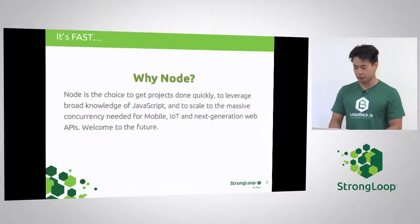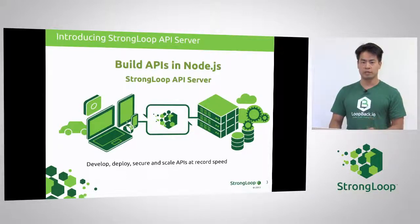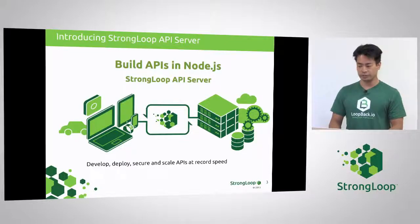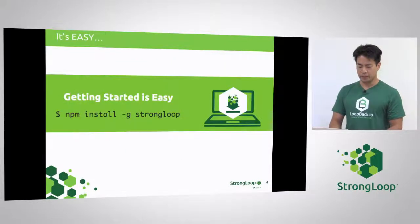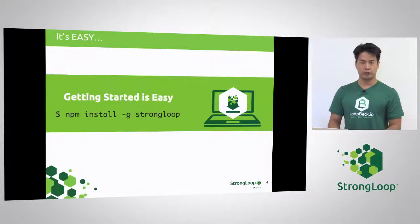Welcome to the future. So what is Strongloop API server? It's an API server that we built to build APIs really quickly, get them to scale, secure them, do all these use cases that you normally would do with Node, just make it easier. And what I mean by easy, I really mean get started easy. So npm install -g Strongloop, and you're done — you're getting started.